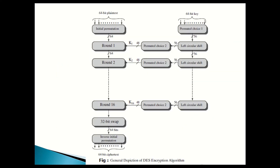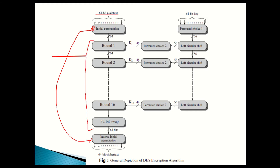Now let's go back to the main things that happen in the algorithm. First, the 64 bits of plain text go into the first step called initial permutation. In the initial permutation, we rearrange the bits into different positions according to a matrix. In between, we have 16 rounds, and for each round we use a key from key 1 to key 16. After the last round, we do something called a 32-bit swap.